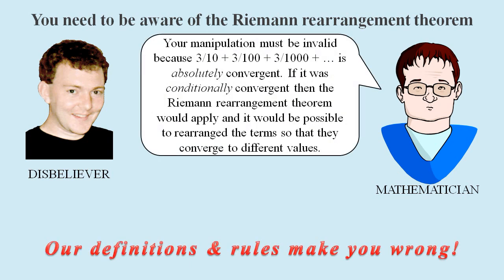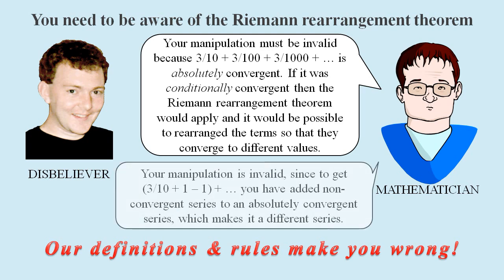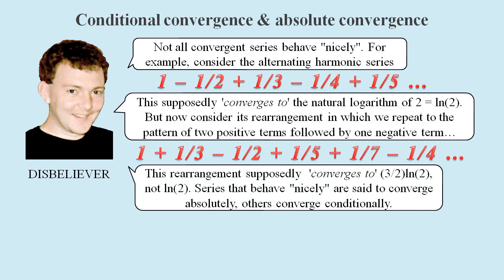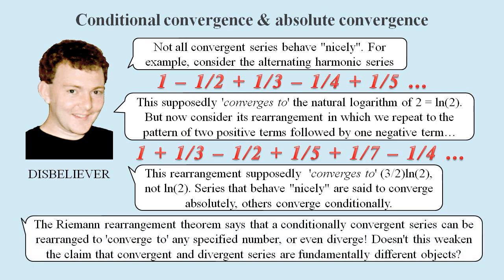The mathematicians will say that 3 tenths plus 3 hundredths and so on rearrangement is an absolutely convergent series, and we would only be able to make it converge to different values if it was conditionally convergent, because then the Riemann rearrangement theorem would apply. They're effectively saying that it's fine to rearrange terms as long as it can't be viewed as changing the series from one of their categorizations to another one of their categorizations. In fact rearrangement can even make a series diverge. So surely we can't claim that different series are fundamentally different kinds of objects just by placing them into different classifications, especially when it's so easy to drift across these made up classifications by simply rearranging the terms.